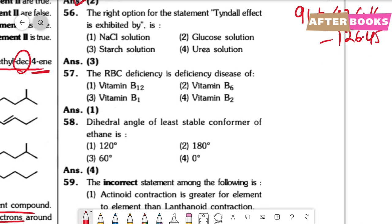Question number 56. Tyndall effect — which solution among the given options will exhibit it? The Tyndall effect is shown by colloidal solutions. Among the options, the starch solution is a colloidal solution. So the correct option is option 3.